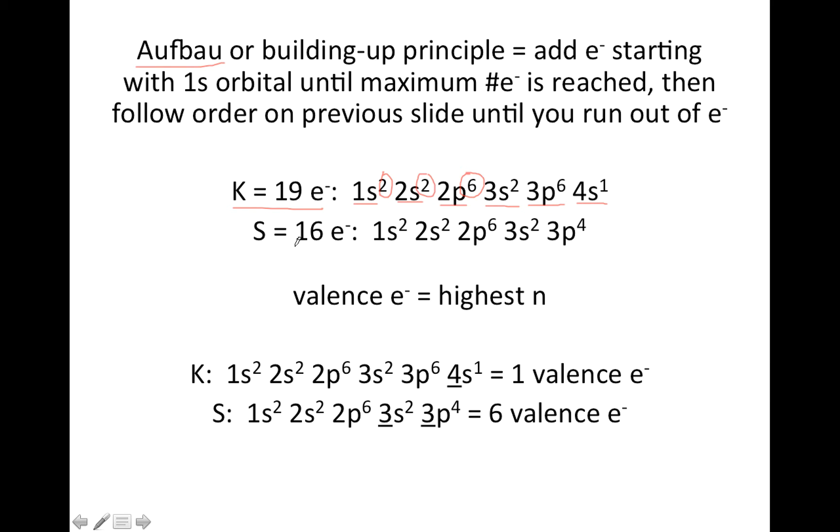The element sulfur, 16 electrons, so we do the same thing, and we can pick up the pace a little bit. s's have two in them. Each set of p orbitals has six electrons in it. And if you fill the 3s with two electrons, at that point you will have 12. So when you get to the 3p, even though there's room for six, you only have four more electrons, so we're not going to write a 6 there, we're going to write a 4.